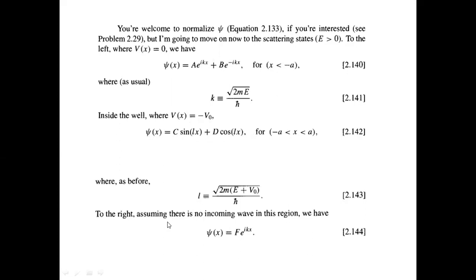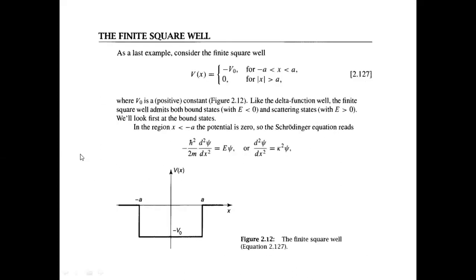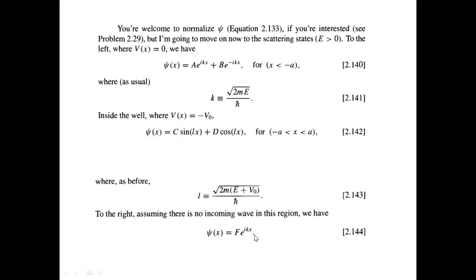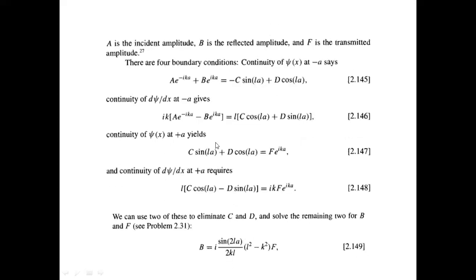For x greater than a, physically there is no incoming wave in this region — there is only an outgoing wave. A particle coming in can get trapped in the potential well or get transmitted to the other region. As we see in the diagram, on the other side there is no incoming amplitude, only outgoing amplitude, which is why we write a solution of only one term in this region.